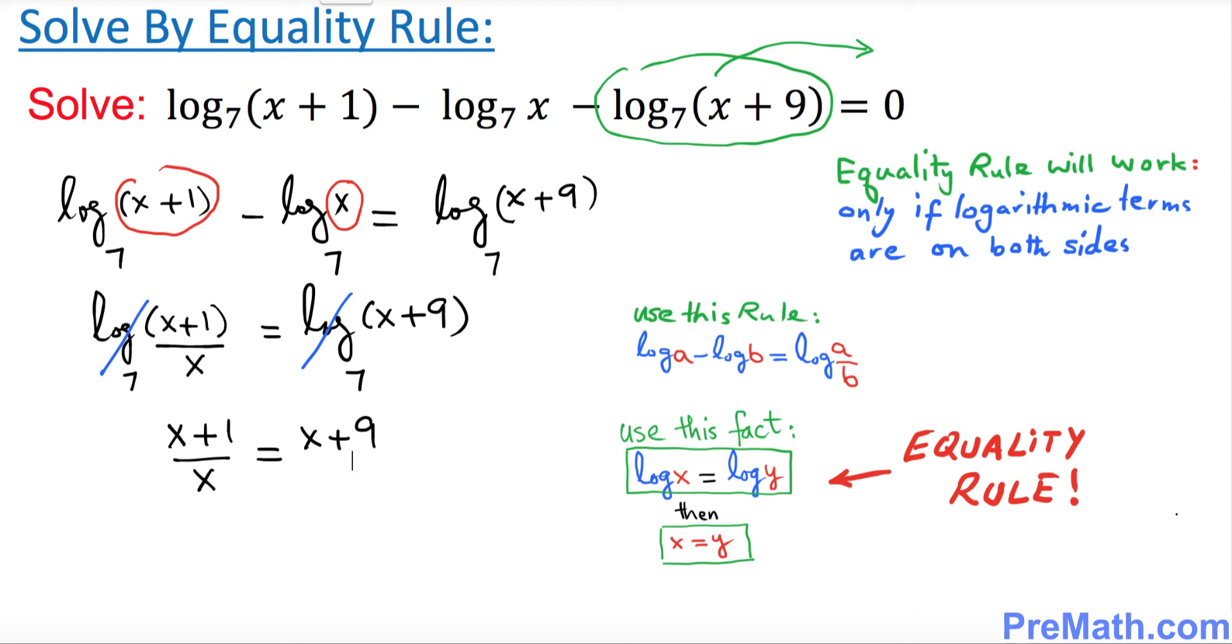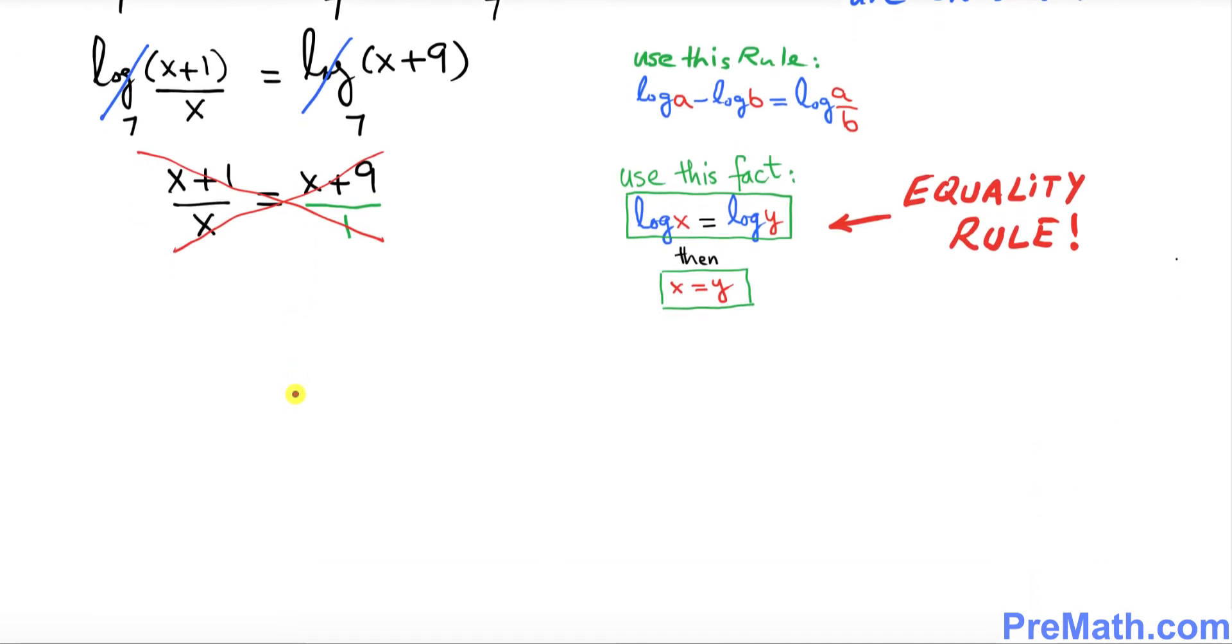Let me put 1 underneath and now we're going to remove this fraction by using cross multiplication. I want you to crisscross this way and this way. Let's go ahead and take care of that.